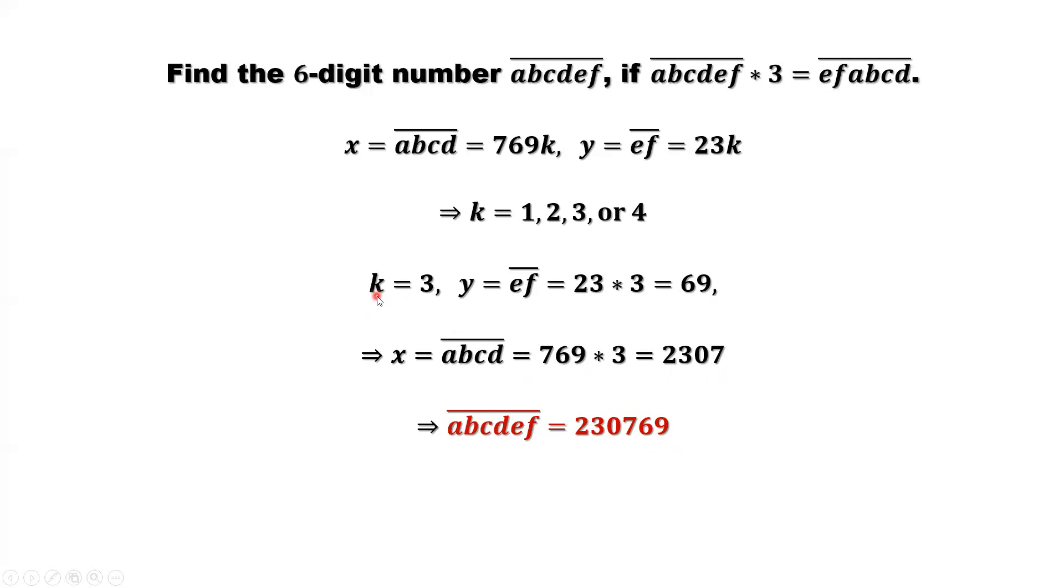Let's check last K. K equals 4. The last 2-digit, ef equals 23 times 4 equals 92. First 4-digit, abcd equals 769 times 4 from this formula, which is 3076. We have 6 numbers here to form abcdef equals 307692.